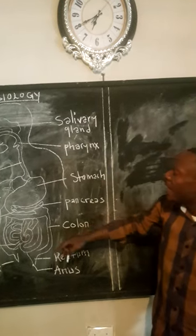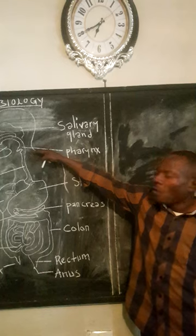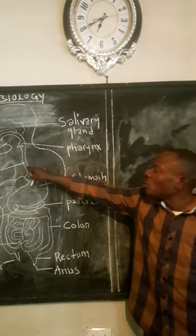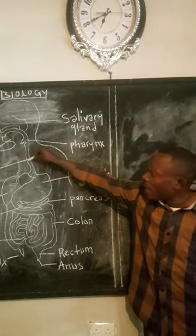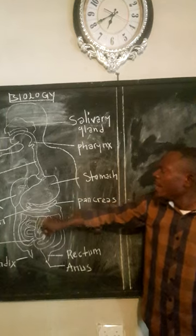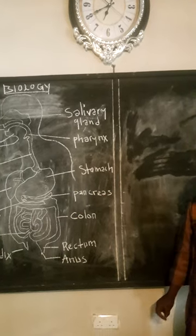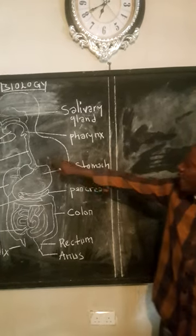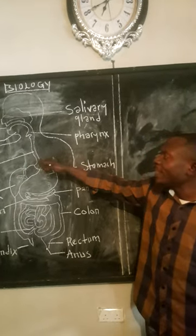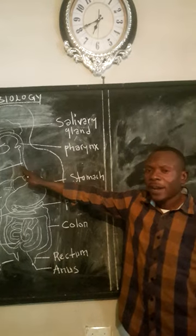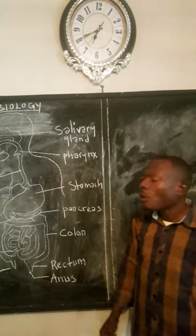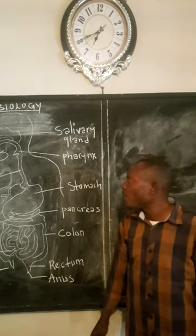Peristalsis is the wave-like motion of a bolus through the alimentary canal — or specifically through the oesophagus, since the bolus is only in the oesophagus at this stage. Now let's talk about the process of peristalsis, because it is the only process that takes place in the oesophagus. It's important that we understand the process behind the propelling of food through the oesophagus.